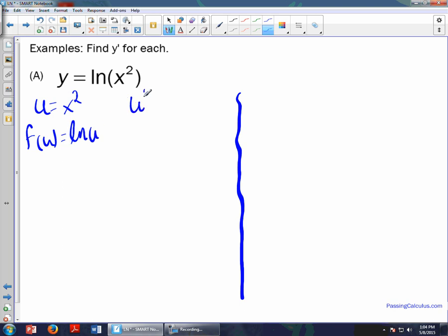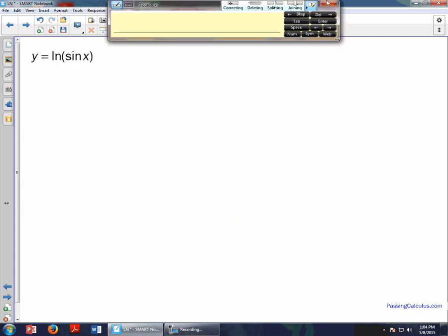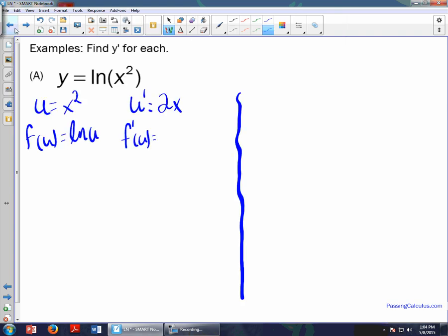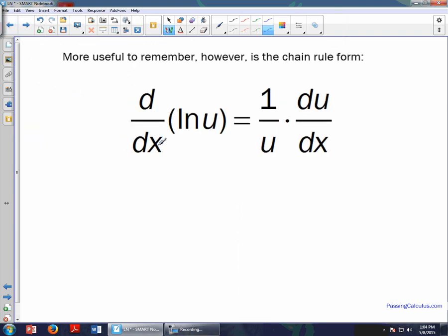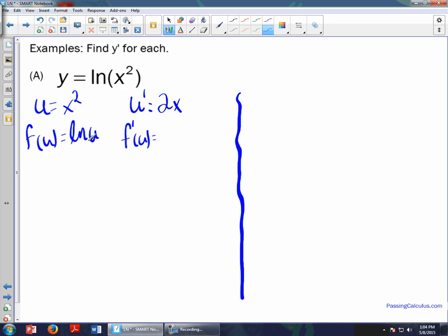And then my u prime, so my derivative here with respect to x is 2x, so I just used the power rule for that one. And then my f prime of u. Now this is where some of my students get a little bit confused. This is not the ln of u that I had before that I was differentiating with respect to x. When I do this here I'm differentiating with respect to u. So this is really no different than ln of x. So what I get is just 1 over u.